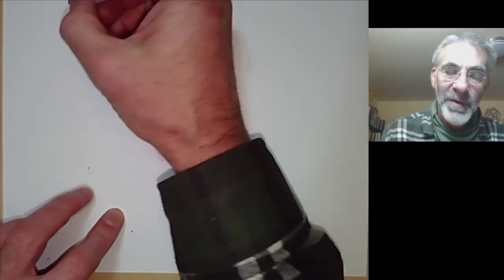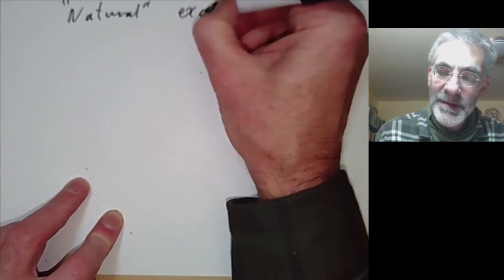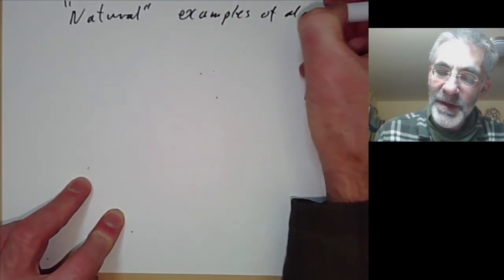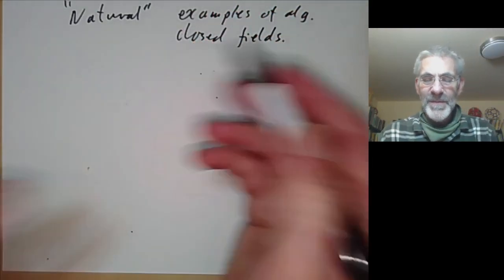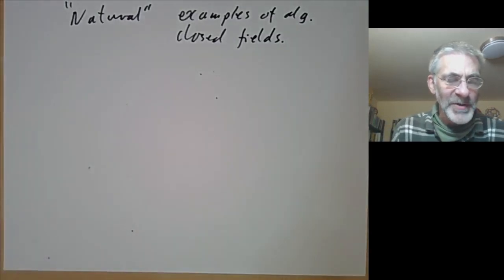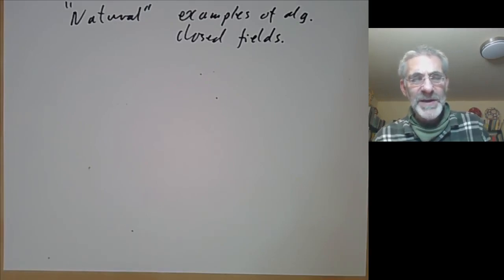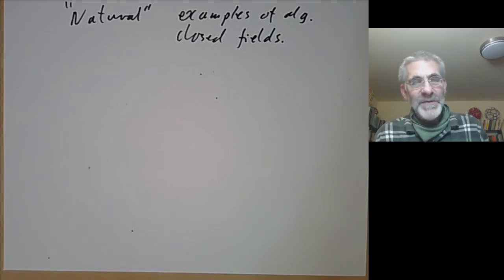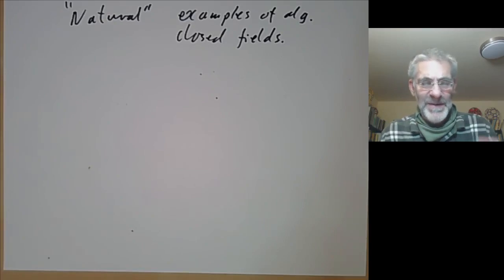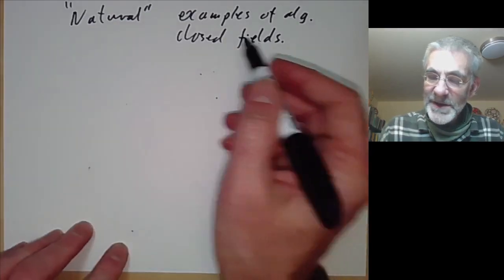That gives the complex numbers as a fairly natural example of an algebraically closed field. Now let's have some natural examples of algebraically closed fields. There are lots of examples you can get just by taking the algebraic closure of a field, but the trouble is these aren't terribly natural — they're rather hard to write down explicitly, since the construction involved an infinite sequence of polynomials and adding roots, which would be a horrendous bookkeeping operation.